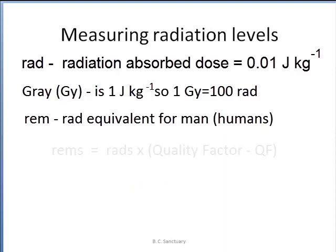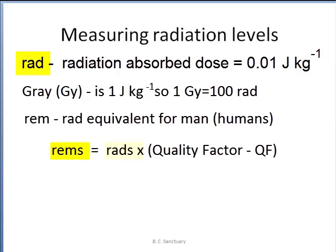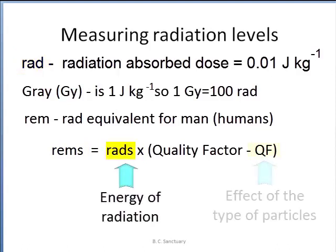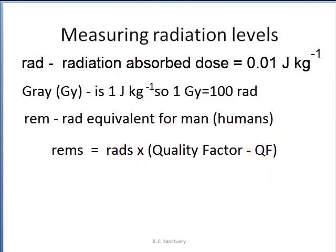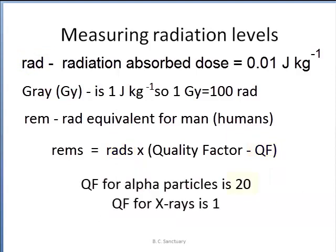A rem is given by a simple equation. The effective dose, which is in units of rems, is equal to the dose in rads times a quality factor. The rem unit takes into account both the energy of the radiation and its relative effects on human tissue. For example, alpha particles have a quality factor of 20, which is much more dangerous than x-rays, with a quality factor of 1.